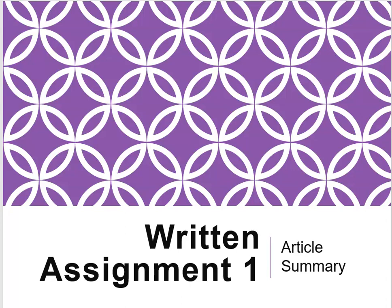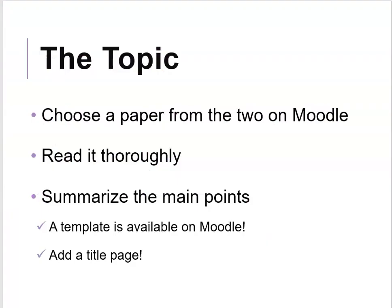Your first written assignment is an article summary. It's not meant to be very difficult, but it's meant to get you guys familiarized with how to read a scientific article. For the topic, I'm going to post two different scientific papers on Moodle. I'll make them very clear, and you guys just have to pick one of the two. You can have a look at both, but you're going to pick one, read it through, and then summarize the main points.